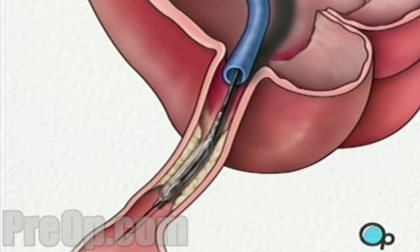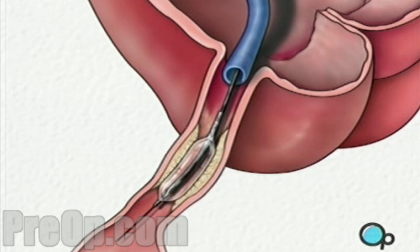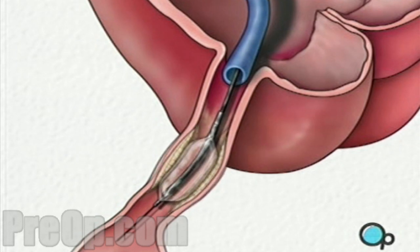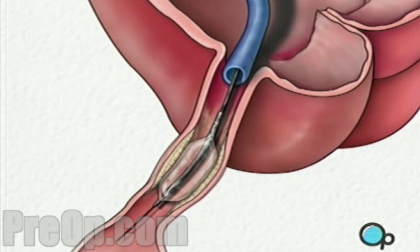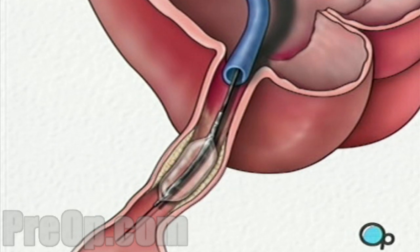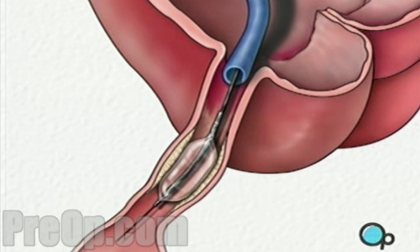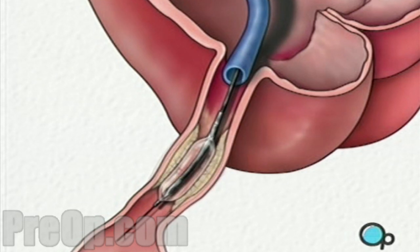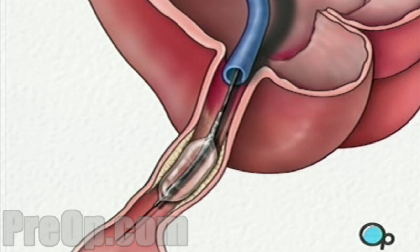The balloon is briefly inflated. As it expands, it squeezes the plaque deposits against the wall of the artery. It also stretches the artery wall and enlarges the channel through which blood flows. Your doctor will continue to inflate and deflate the balloon until normal blood flow has been restored.